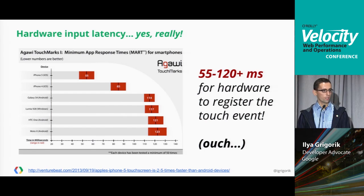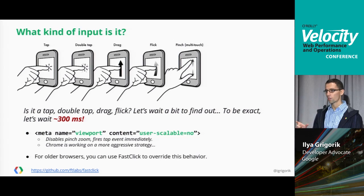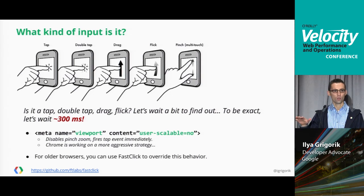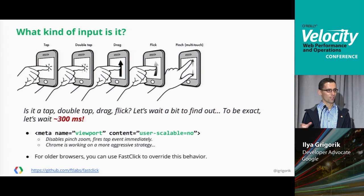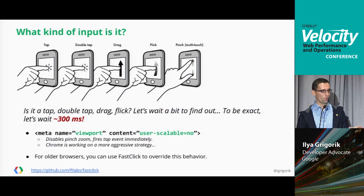That's a problem we can iterate on — we need better touch screen manufacturing. Now that we've registered the event, we need to figure out what kind of input it is. We have different gestures, and to determine them we add software latency. We don't know if you're going to pinch-zoom or swipe, so we wait — let's say 300 milliseconds — to see what happens next. 300 milliseconds later, we confirm it wasn't a pinch-zoom and fire the click event. So we're already 350 to 400 milliseconds in and haven't performed anything meaningful at the page layer.